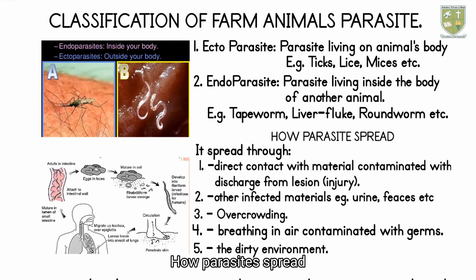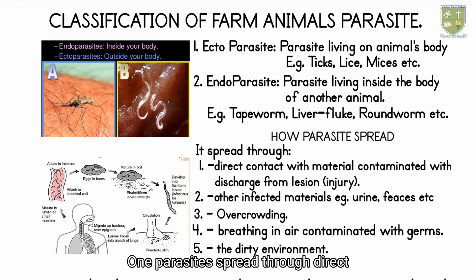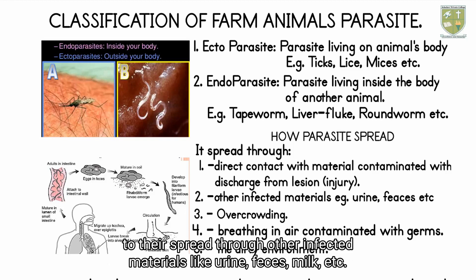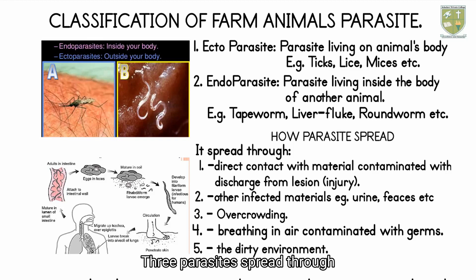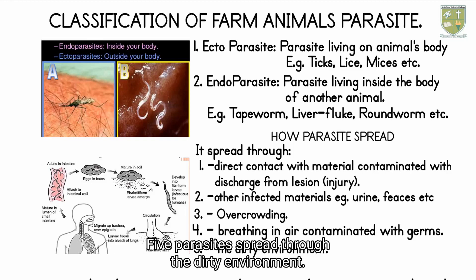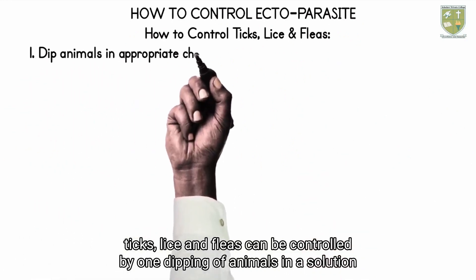Both ectoparasites and endoparasites can be spread through the following ways: one, through direct contact with material contaminated with discharge from lesions or injuries; two, through other infected materials like urine, feces, milk, etc.; three, through overcrowding; four, through breathing in air contaminated with germs; five, through a dirty environment.